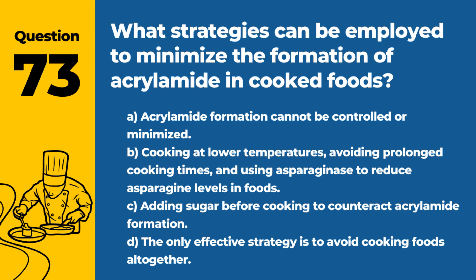Question 73. What strategies can be employed to minimize the formation of acrylamide in cooked foods? a. Acrylamide formation cannot be controlled or minimized. b. Cooking at lower temperatures, avoiding prolonged cooking times, and using asparaginase to reduce asparagine levels in foods. c. Adding sugar before cooking to counteract acrylamide formation. d. The only effective strategy is to avoid cooking foods altogether. Answer: b. Cooking at lower temperatures, avoiding prolonged cooking times, and using asparaginase to reduce asparagine levels in foods. These strategies help reduce the risk of acrylamide formation, a concern for food safety.